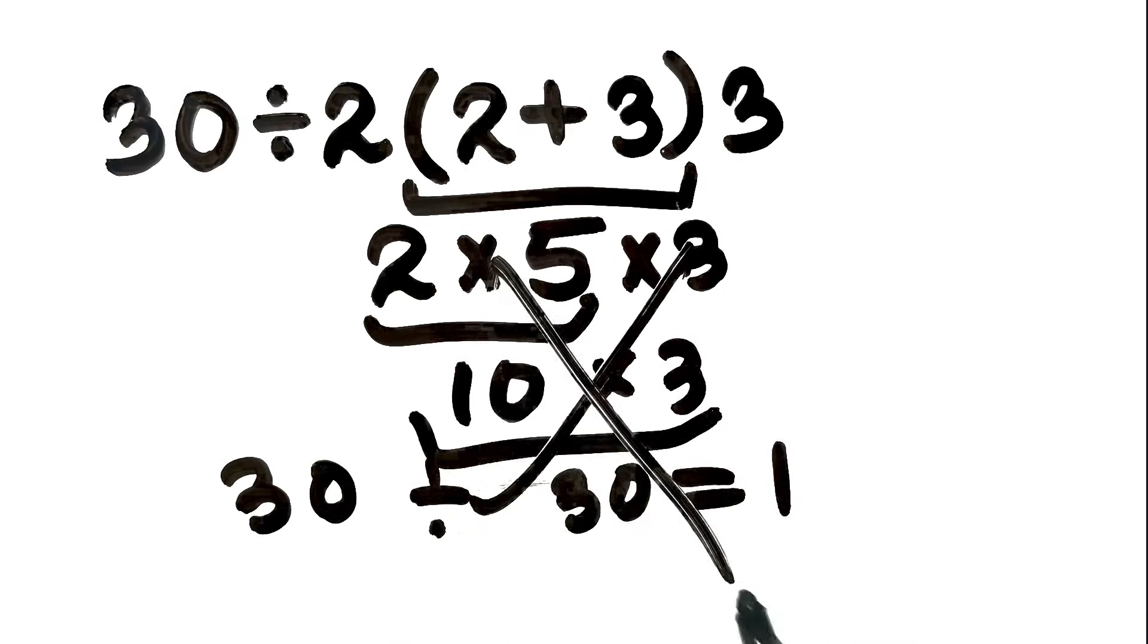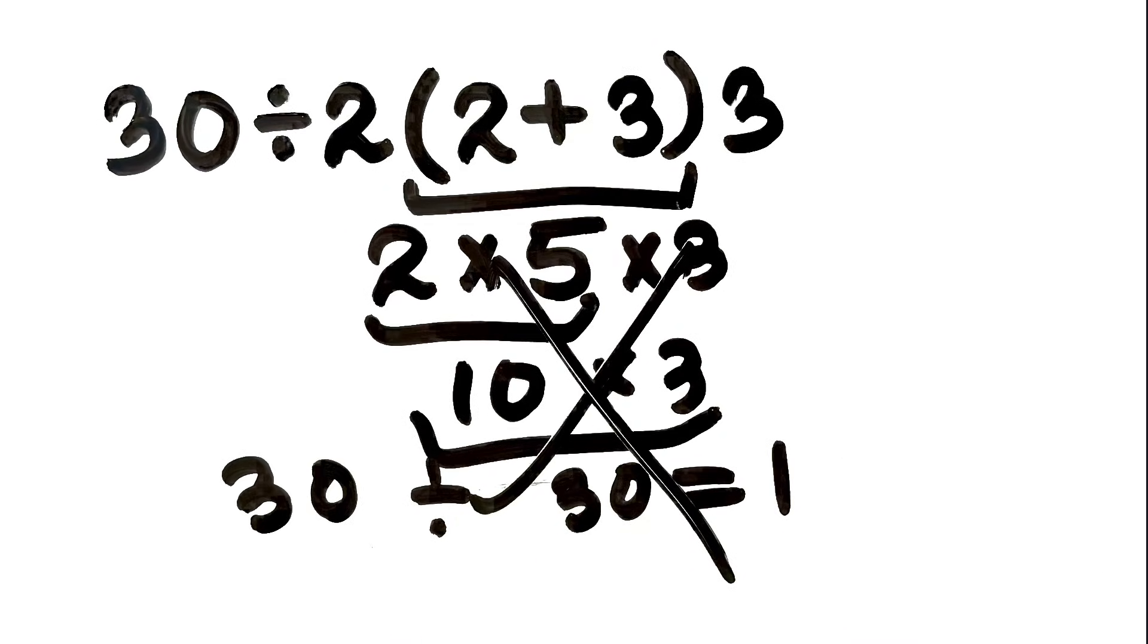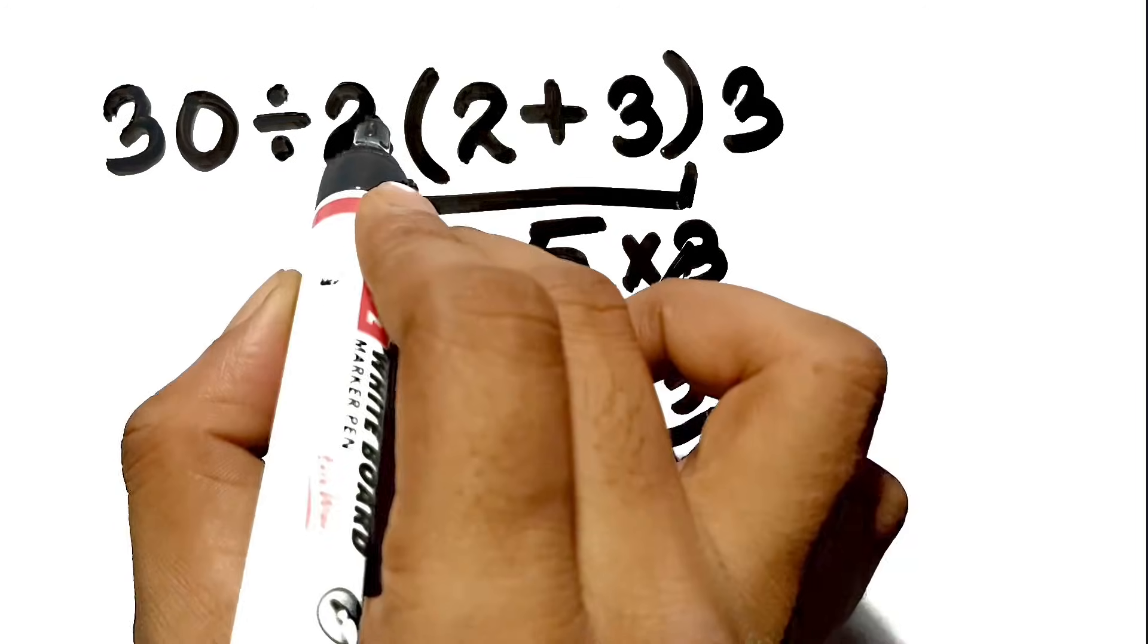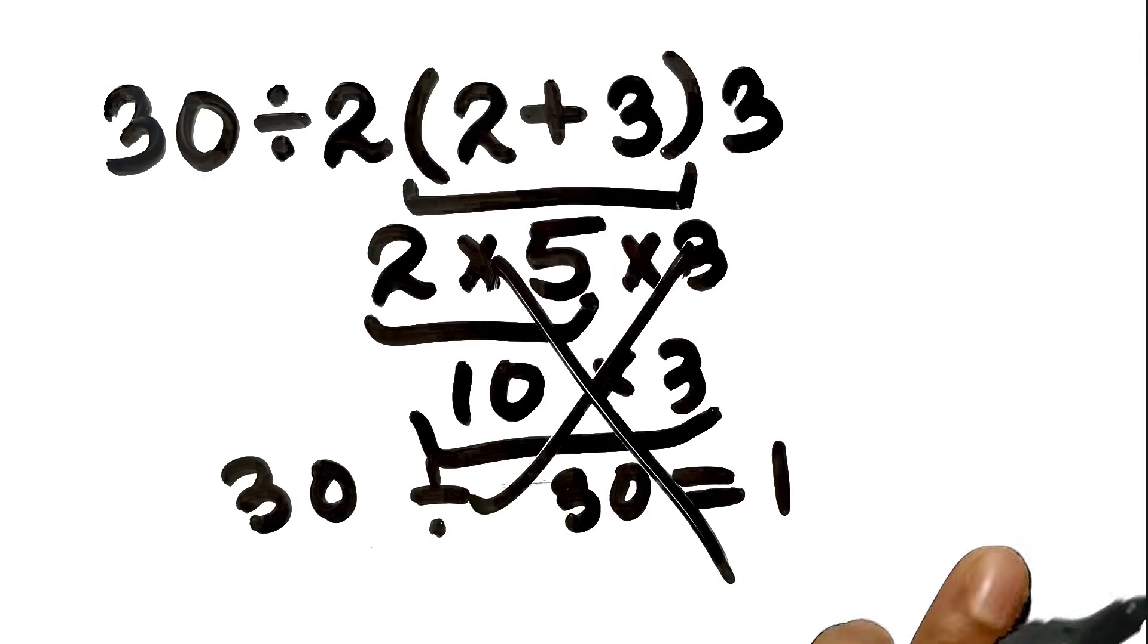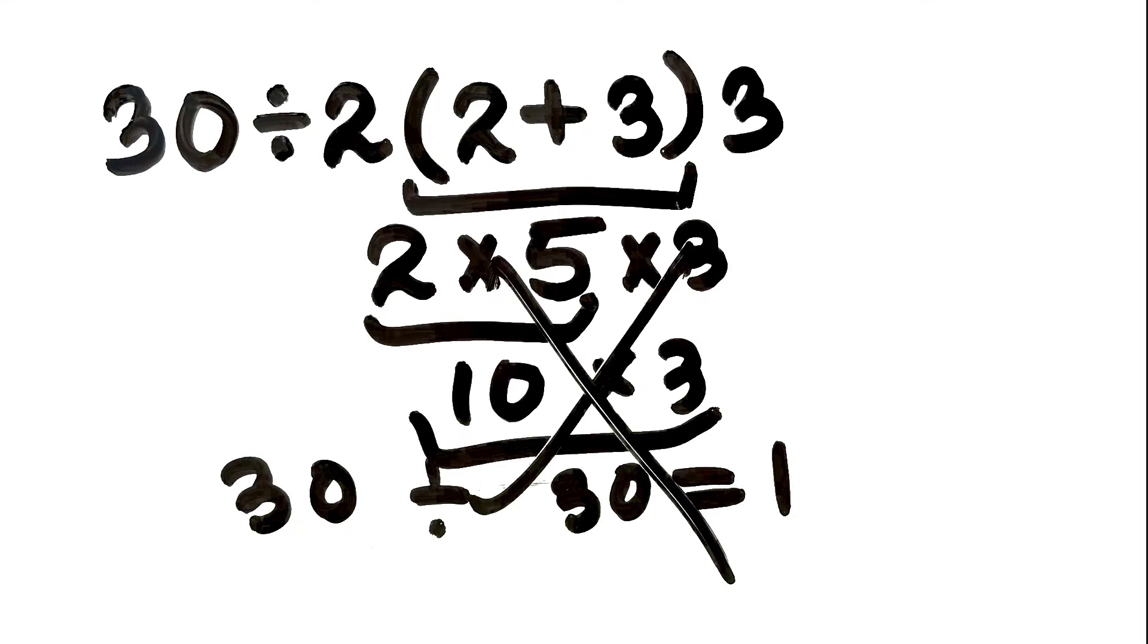But this answer is not correct, because according to the order of operations, implied multiplication does not have special privileges over division. There is a strict sequence we must follow.